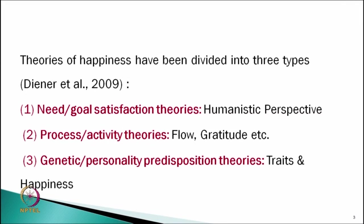Other scholars focus more on process and activity theories. They say that when we are doing certain activities, during that process we are happier. For example, during flow — an activity in which we involve fully — or gratitude and thanksgiving activities. A third group of scholars focused more on genetic and personality disposition theories, saying that happiness is a trait, and various traits are positively or negatively correlated with happiness.